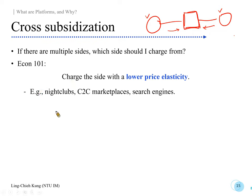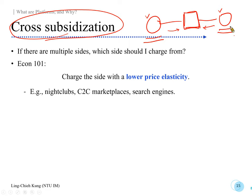There are more things to discuss about cross-subsidization. The key strategic decision is: which side is the subsidizer — your major revenue source — and which side receives subsidies and discounts in order to attract the subsidizers? When we get into platform pricing, we will revisit this topic and consider additional factors for deciding who subsidizes whom.